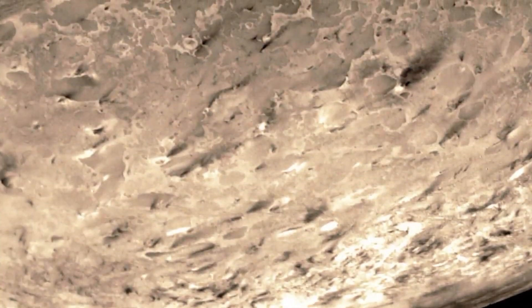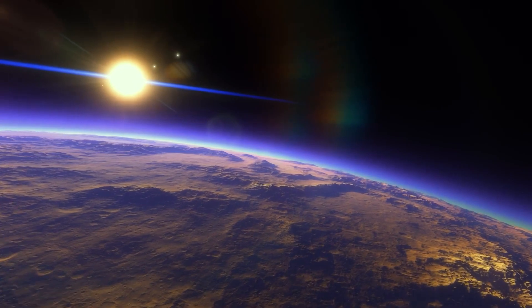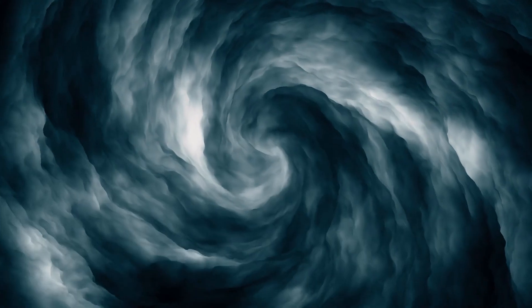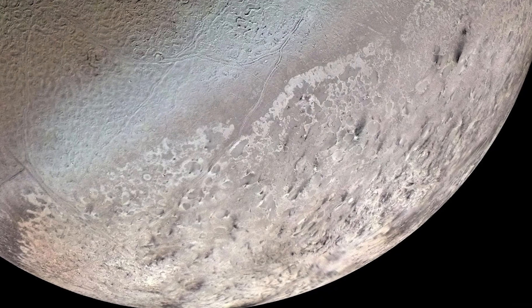Triton's thin atmosphere contains various gases like methane, nitrogen, and traces of carbon dioxide and carbon monoxide, and its geologically active surface displays fascinating features like volcanoes, geysers, craters, plains, ridges, and valleys.